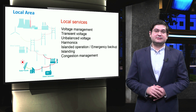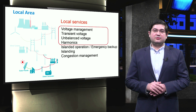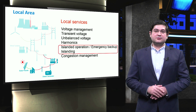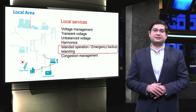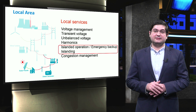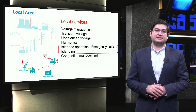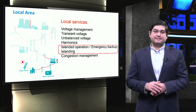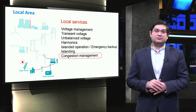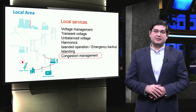At lower grid levels, ancillary services are generally considered as local. The voltage is an example of a local signal, and voltage phenomena include local voltage management, transient voltage, unbalanced voltage, and harmonics. Also, within the context of microgrids, islanded operation and emergency backup are provided for a small grid area. Moreover, a microgrid should be able to ensure safe transition from grid connected to islanded modes, and vice versa. The safe transfer from grid connected to islanded mode is called the islanding process. Another location-specific issue, which can occur at both transmission or distribution grid, is the congestion of the electrical lines.